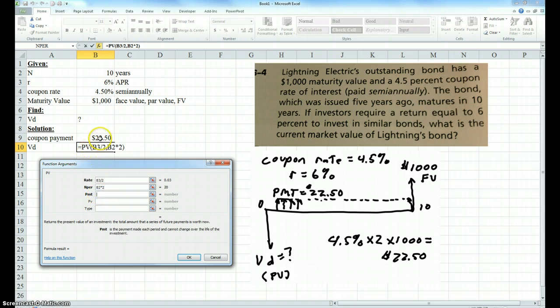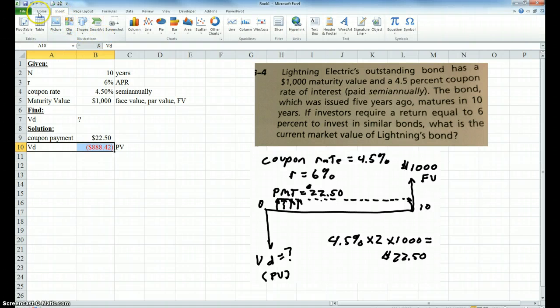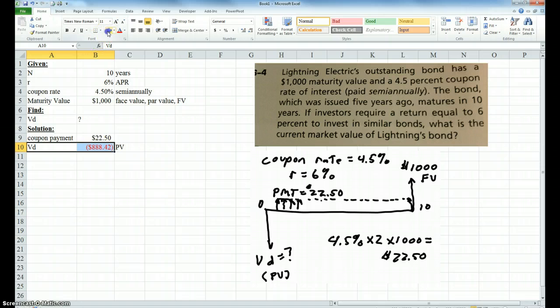The payment, well, we already calculated the payment, so I'm just going to click here. And the future value, well, that's how much I'm going to get paid when the bond matures. That's right here. Type, well, I just leave it blank because it's an ordinary annuity. These payments are at the end of the period. So you just leave it blank and you go okay.